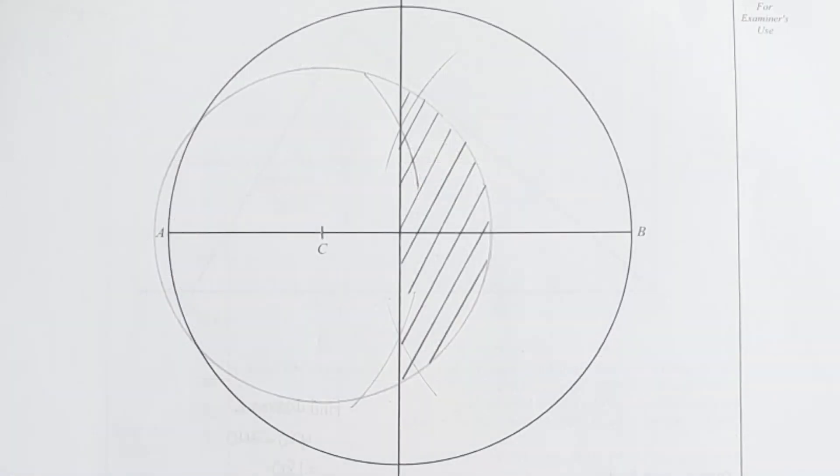Question 17. First thing that I drew was the locus of points which are equal distance from A and B. I drew a perpendicular line at the center. Then locus of points which are 4 cm away from C. So I measured 4 cm from point C and drew a full circle.